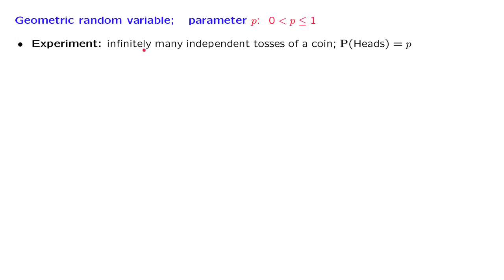When we say that the infinitely many tosses are independent, what we mean in a mathematical and formal sense is that any finite subset of those tosses are independent of each other. I'm only making this comment because we introduced the definition of independence of finitely many events, but had never defined the notion of independence of infinitely many events.